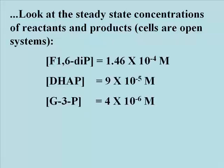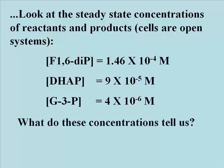Here are some actual concentrations, as measured in rat liver cells. We can intuit something about cellular energy needs and the two glycolytic reactions just from these concentrations. What do they tell us?